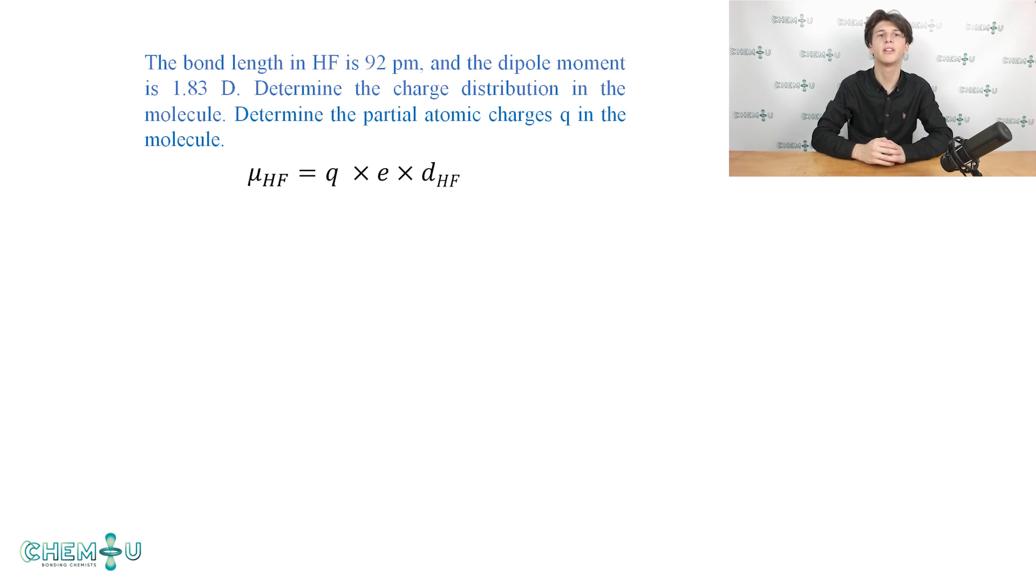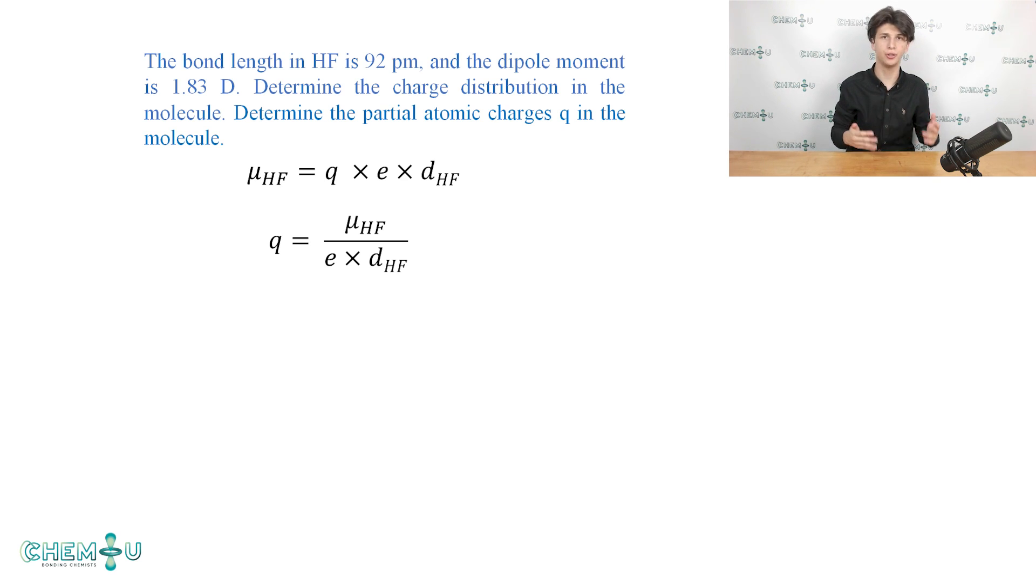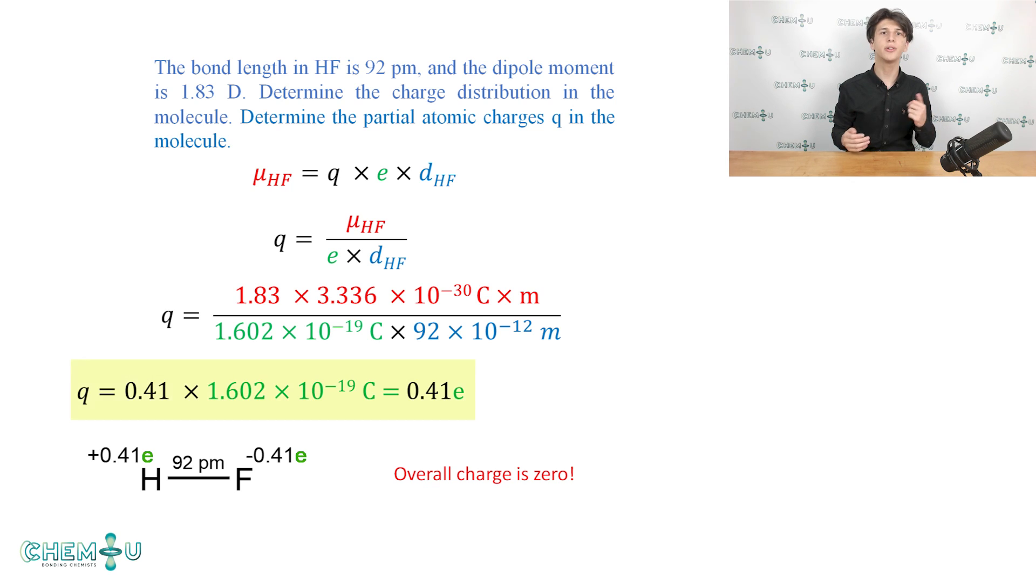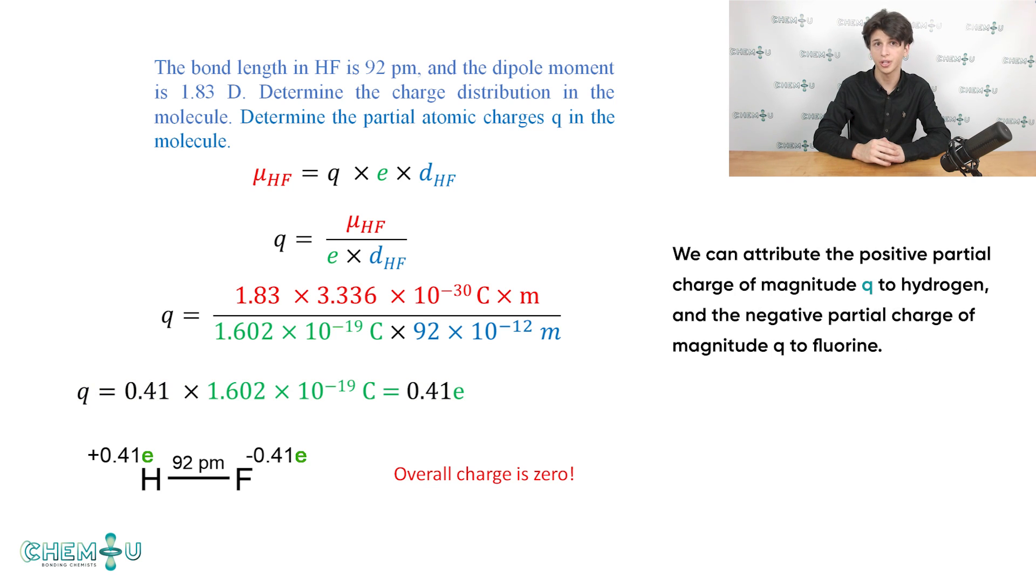First, let's rewrite the dipole moment formula with respect to the point charge Q. Q equals a dipole moment divided by electron charge and the internuclear distance. Now we can calculate the charge distribution by substituting variables with the previously given data. Well done! Here you can see the calculated value of Q. It means that we can attribute the positive partial charge of magnitude Q to hydrogen and the negative partial charge of magnitude Q to fluorine. Pay attention that the molecule itself is not charged, meaning that the overall charge is zero.